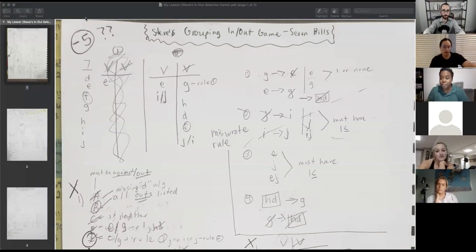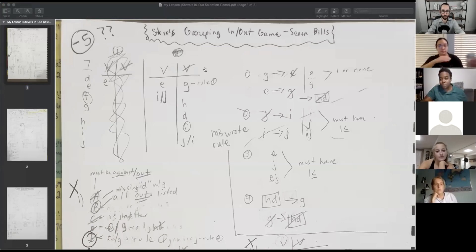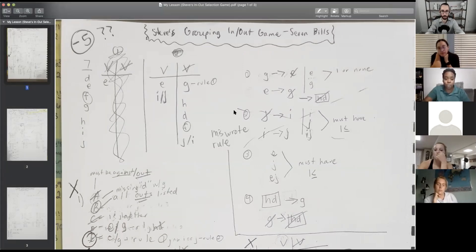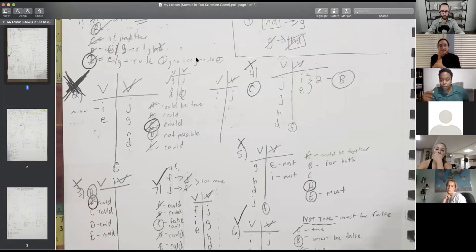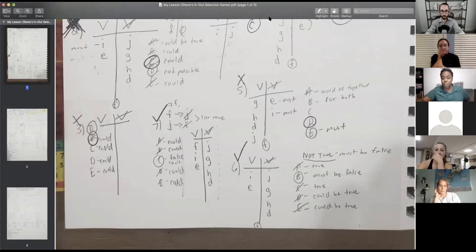Okay, so this is Steve's In-N-Out selection game. I wanted to do this one in particular because when I first did it, I like to challenge myself and try it off the bat. So I got negative five. I started with the T-charts, and then once I learned you're supposed to do a diagram first and then the T-charts, I was able to get a perfect score on the next try.